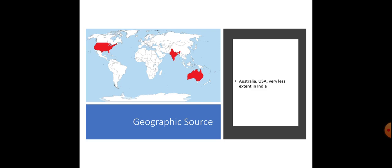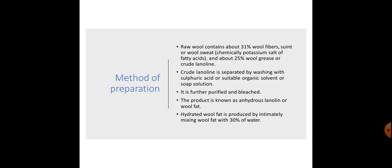Geographical source: it is obtained mainly from Australia and USA, but to a very lesser extent from India. Method of preparation: raw wool contains about 31% wool fiber or wool sweat, which is chemically the potassium salt of fatty acids, and about 25% wool grease or crude lanolin. Crude lanolin is separated by washing with sulfuric acid, a suitable organic solvent, or soap solution. It is further purified and bleached. The product is known as anhydrous lanolin or wool fat.